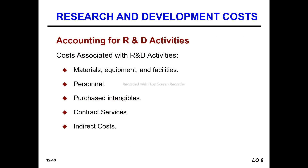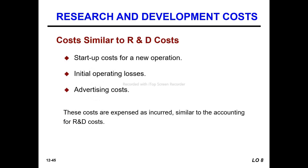Accounting for research and development includes costs of materials, equipment, and facilities. There are also costs similar to research and development costs, such as start-up costs for new operations, initial operating costs, and advertising costs. These costs are expensed as incurred, similar to accounting for research and development costs.